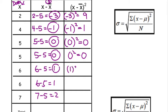1 squared is 1. 1 squared is 1. 2 squared is 4. All right, so those are our differences from the mean squared.